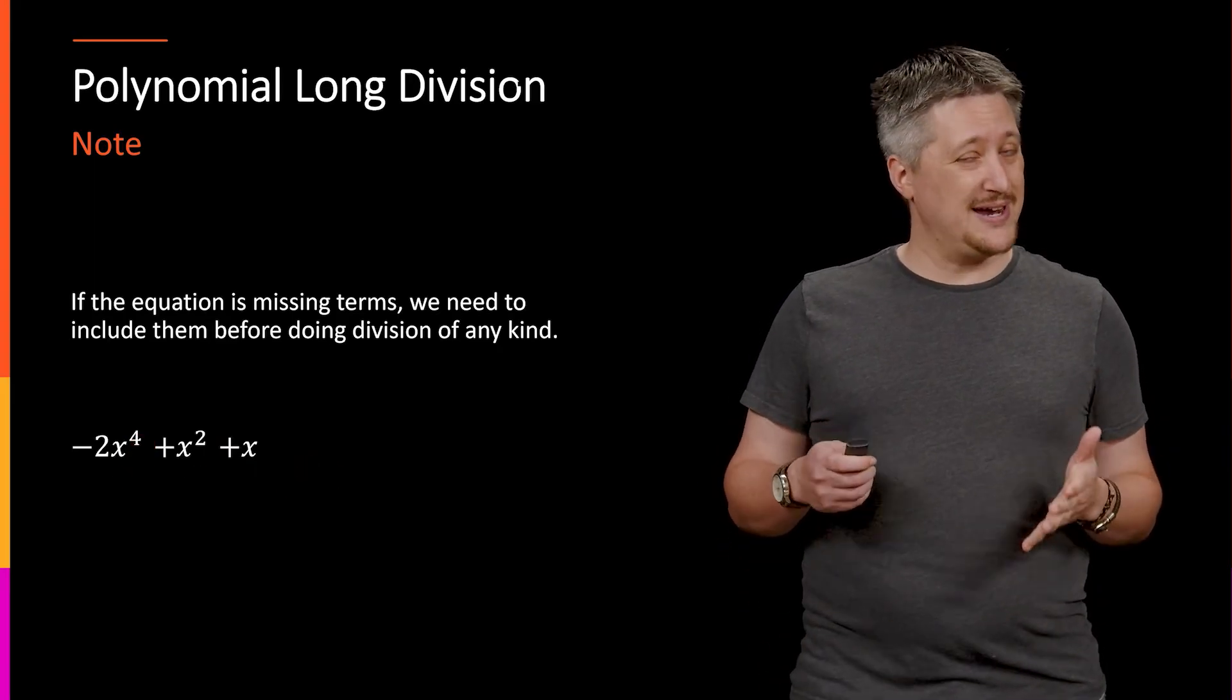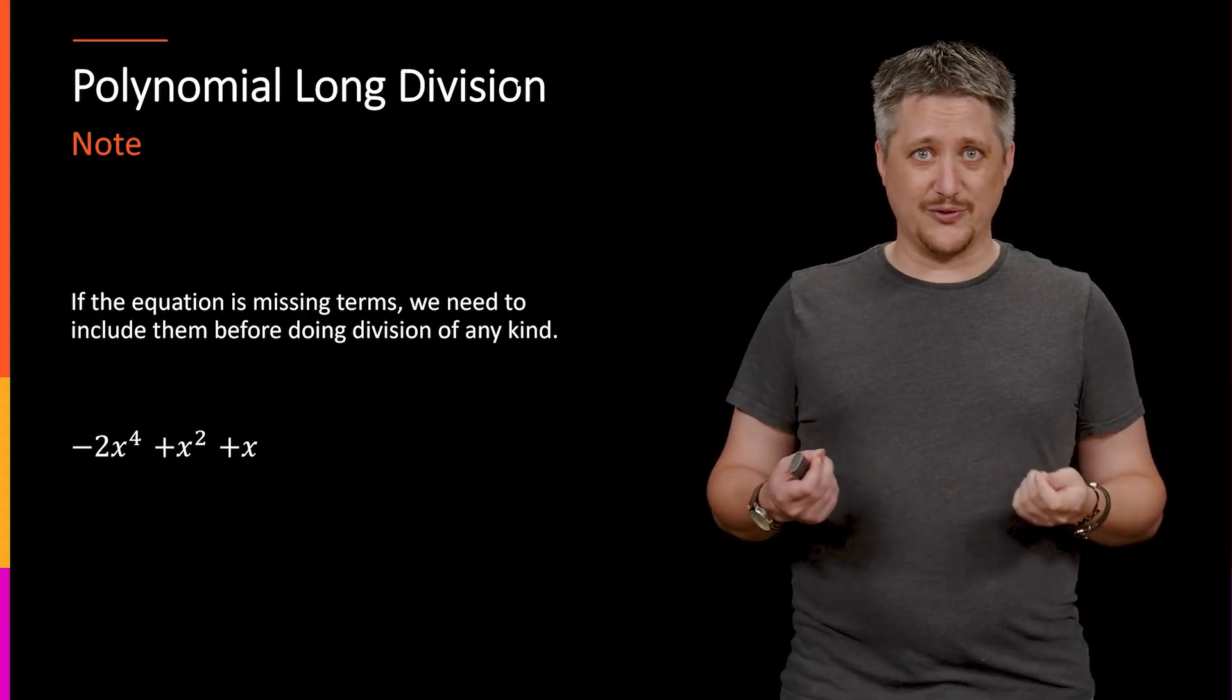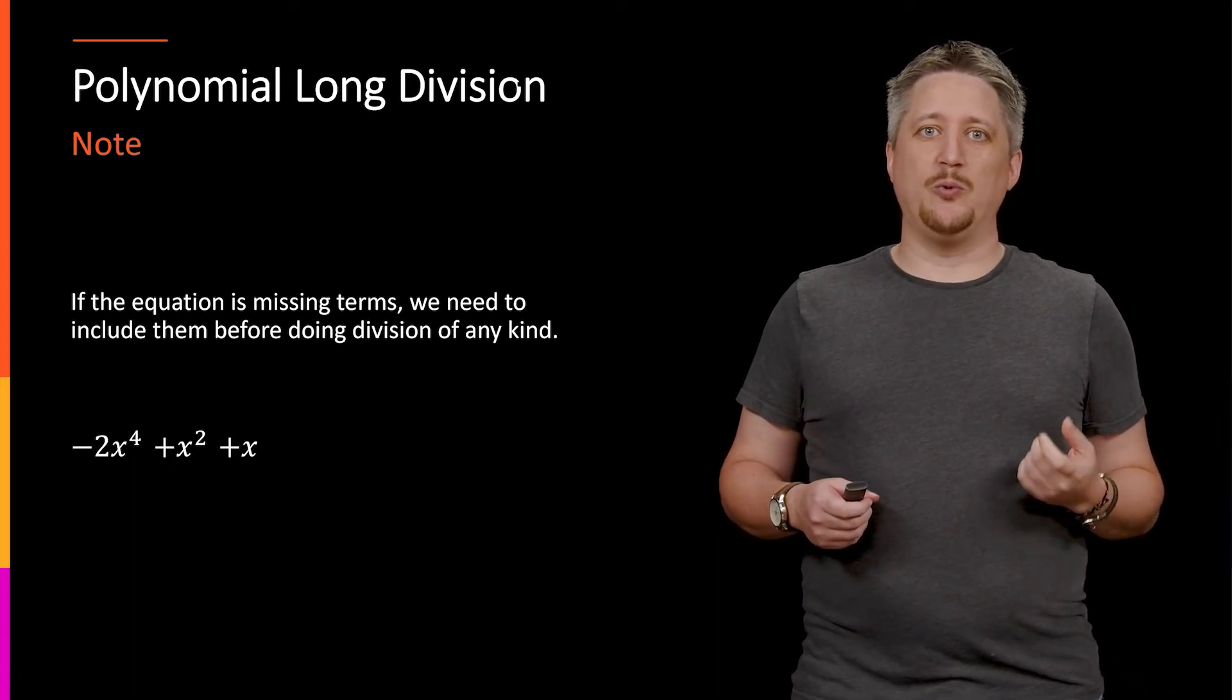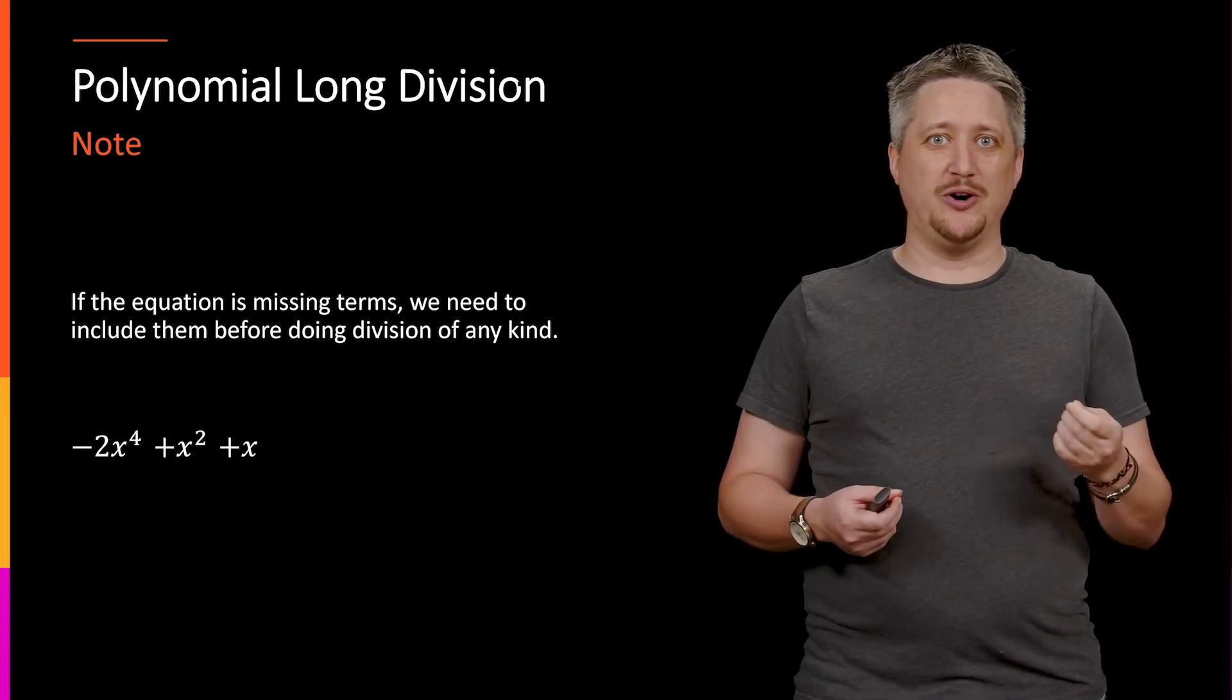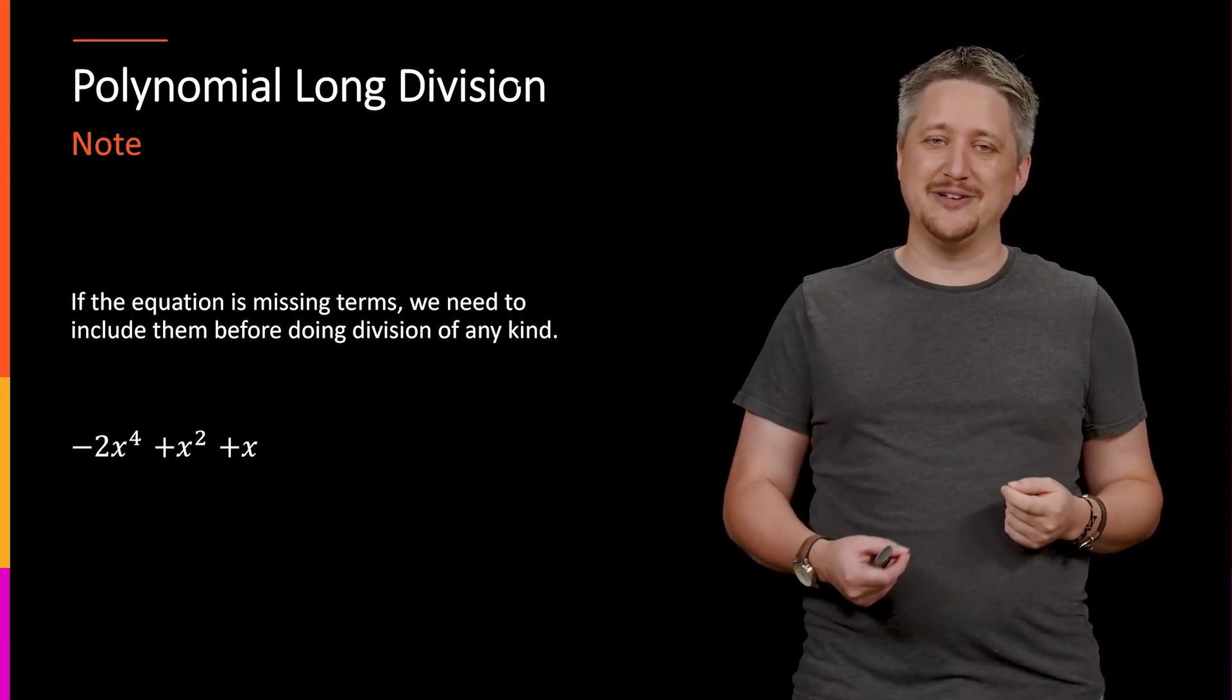But it turns out that we kind of need those. So when we think about numbers, for example, if I have 1024 in long division, I'm not going to use one, two, and four, I'm going to use one, zero as a placeholder for the hundreds that we don't have any of, two and four, for the tens and ones place.